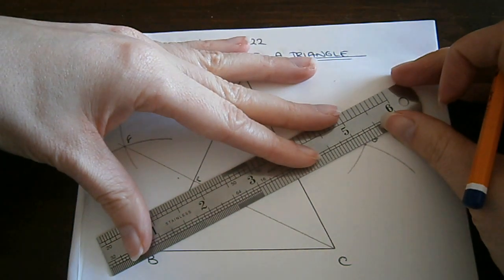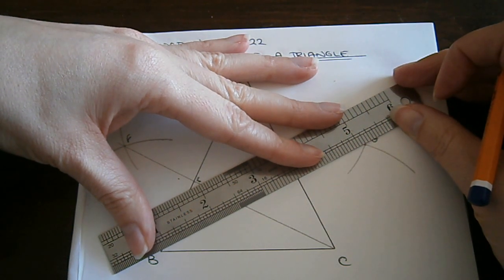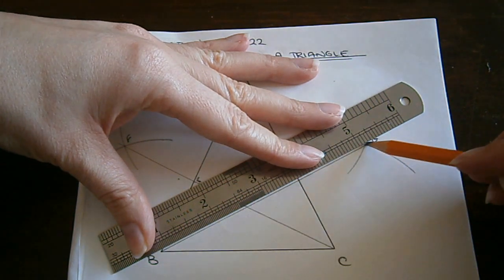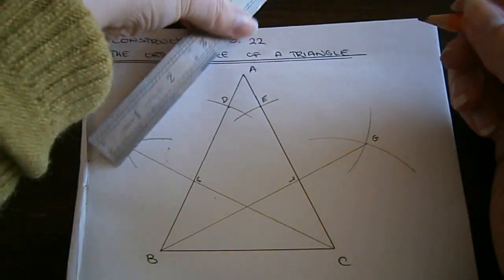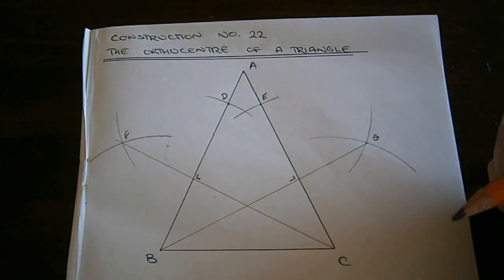Again, I join B to G. This forms a right angle with AC. And again, the point B to AC is an altitude.